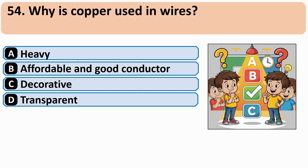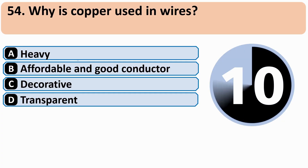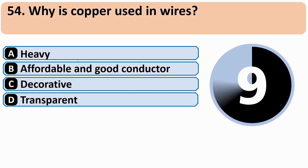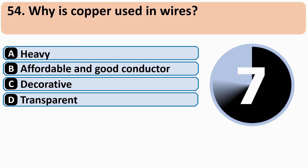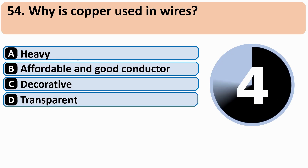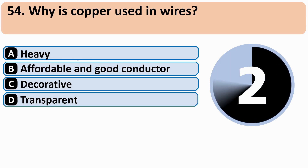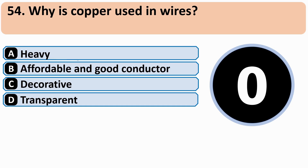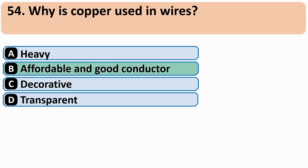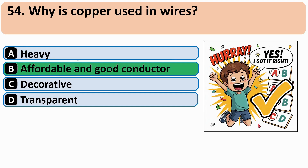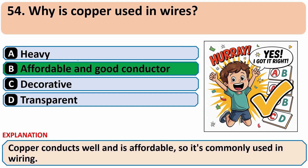Why is copper used in wires? The correct answer is B: Affordable and good conductor.